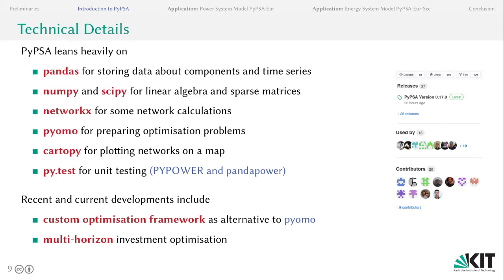On a technical note, PyPSA leans heavily on the packages Pandas for storing data about components and time series, as well as NumPy for linear algebra and sparse matrix calculations, and NetworkX for graph theory and network calculations. We also use PyOMO for interfacing with different commercial and open-source solvers, but recently have also experimented with a custom optimization framework as an alternative to PyOMO in order to save memory. This has been quite successful, saving about two-thirds of memory consumption of our big optimization problems. We also do unit testing with PyTest and compare our results to the outputs of PyPower and PandaPower.